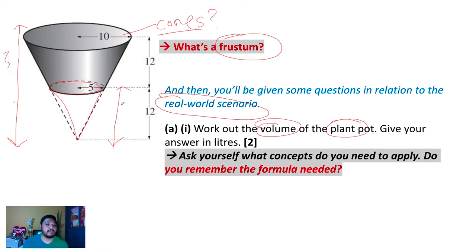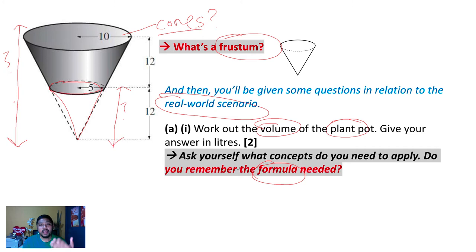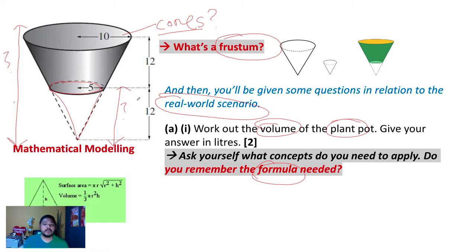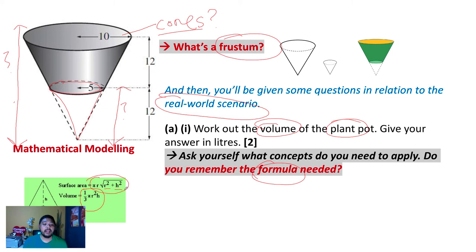If you can find the volume of the bigger cone and then find the volume of the smaller cone, you just minus it off. To do that, you need to remember the formula for the volume of a cone. Mathematical modeling is making use of math to model something that exists in the real world. When you have a cone, the volume is given by one-third π r² h, which is in the syllabus. The surface area is given by π times r times the square root of r² plus h².